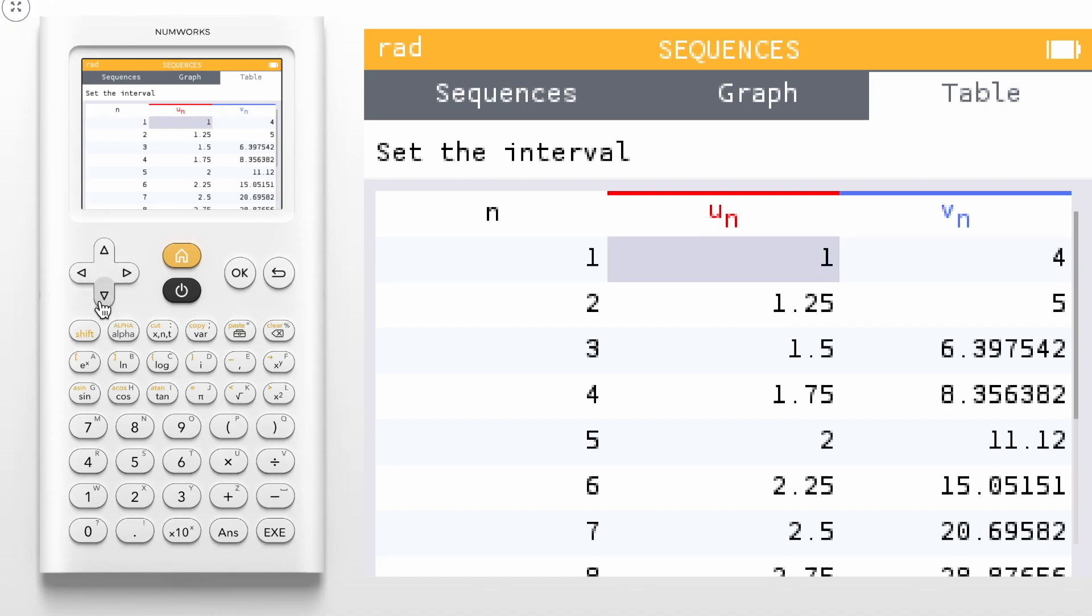Just a reminder: our u sub n is our sequence of x values, and our v sub n is our sequence of y values.